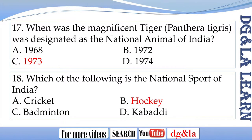Question 17 answer: Panthera tigris was designated as the national animal of India in C. 1973. Question 18 answer: The national sport of India is B. Hockey.